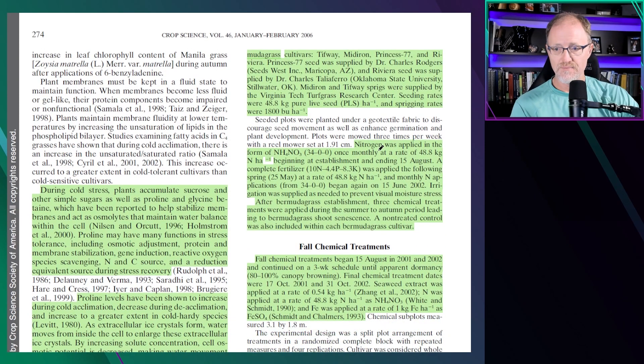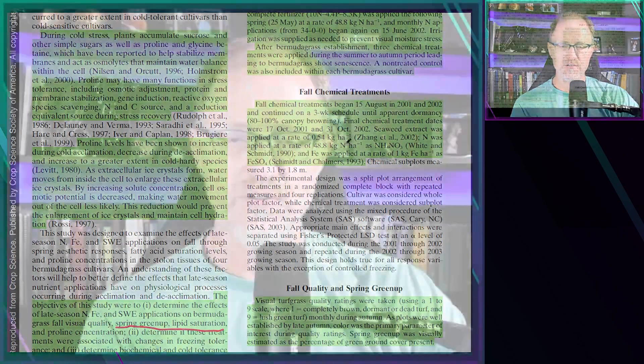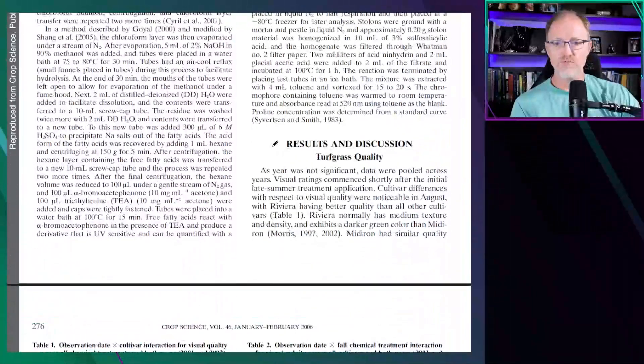They applied the treatments of nitrogen applications, seaweed extract, and iron in the fall as it was moving into dormancy. They measured the various turfgrass measurements in the fall and in the spring coming out of winter dormancy. They measured fall quality and spring green up on a one to nine scale.